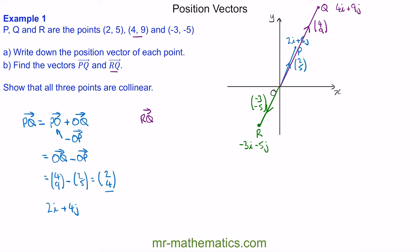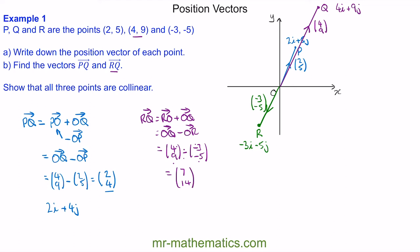For R to Q, we go from R to O and then from O to Q, written as: RO plus OQ. R to O is the same magnitude but opposite direction as O to R, so RQ equals OQ minus OR. OQ is (4, 9) and OR is (-3, -5). In the i direction: 4 minus (-3) is 7. In the j direction: 9 minus (-5) is 14. So RQ is (7, 14), or 7i plus 14j.